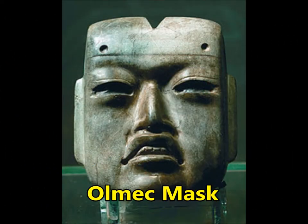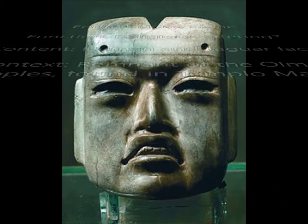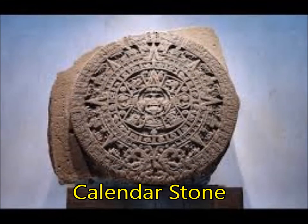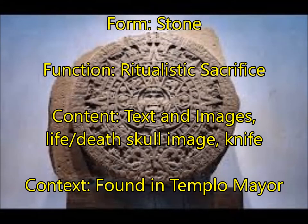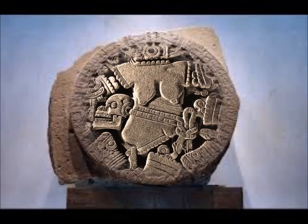First, the Olmec-style mask, which was made of jadeite — a long-lasting stone — and was found in the temple. It incorporates both a human and jaguar form in the face. Next is the Calendar Stone, which was used for ritualistic sacrifices as part of their religion. It has text and images together and has a knife in the center representing life and death.